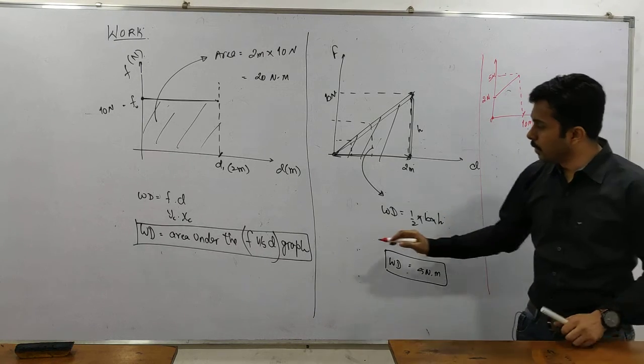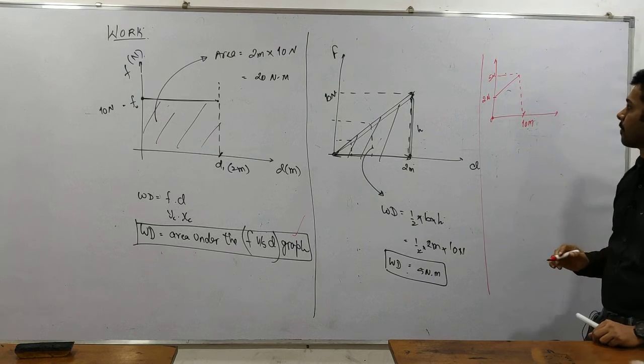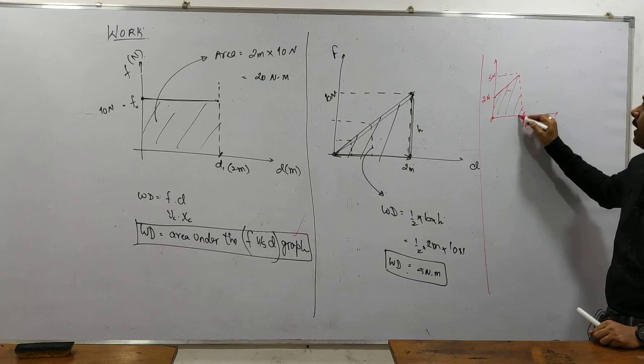Someone asked me find the work done. If the graph is given, what do I know? Work done is nothing but the area under the graph. So this is my graph. This becomes my area.